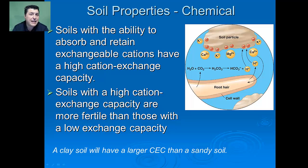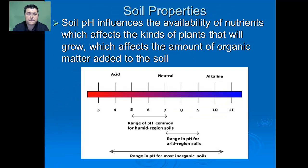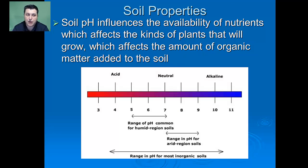A clay soil, because of its alkalinity, actually has a larger cation exchange capacity than sandy soil. Soil pH is another factor that influences the availability of nutrients, which affects the kinds of plants that will grow, which in turn affects the amount of organic material that can be added into the soil.